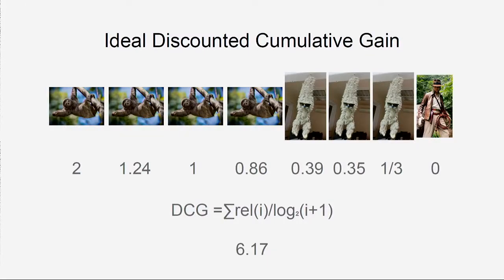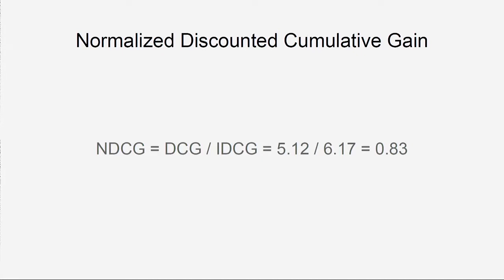We can use discounted cumulative gain (DCG), where we multiply the relevance of each picture by a factor that corresponds to its position in the search results — specifically, one over the logarithm of the position. The further back in the search results, the less weight is given. We use this formula and get some result — say 5.12 — but that number doesn't say much by itself. To understand it, we compute the ideal DCG — what the DCG would be with the perfect ordering — and normalize by dividing our DCG by the ideal DCG. This gives a number between 0 and 1: if it's 1, it's perfect; less than 1, not so much.